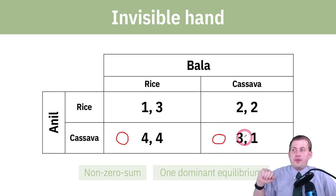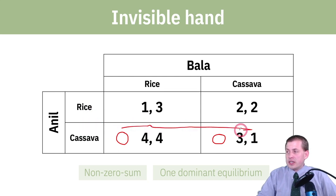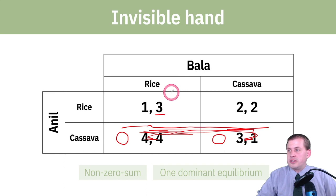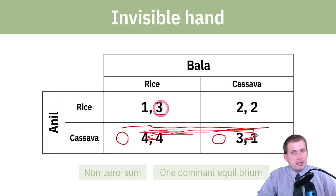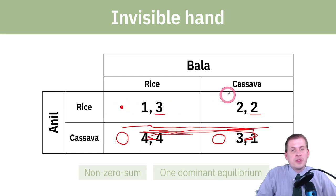So we figured out what Anil should do. Now we need to look at what Bala should do, and we're going to do the same thing — cover up a row. Assume that Anil is growing rice, so cover up the cassava row and only look at what Bala should do if he knows Anil is going to grow rice. You compare the second numbers, which correspond to Bala: he could choose rice for three points, or cassava for two points.